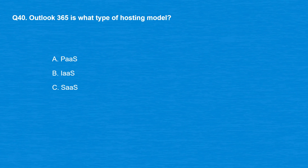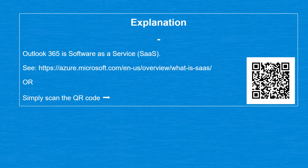Question 40: Outlook 365 is what type of hosting model? Option A: PaaS. Option B: IaaS. Option C: SaaS. The correct answer is Option C, SaaS. Outlook 365 is software-as-a-service.